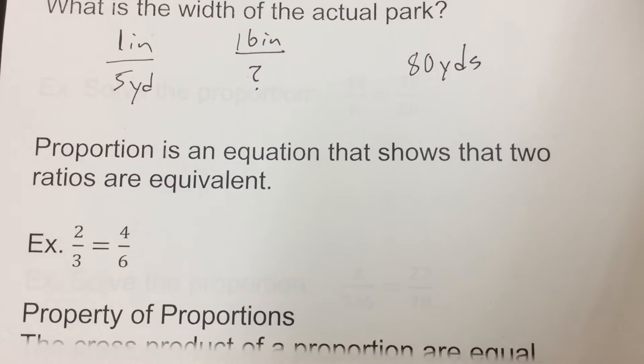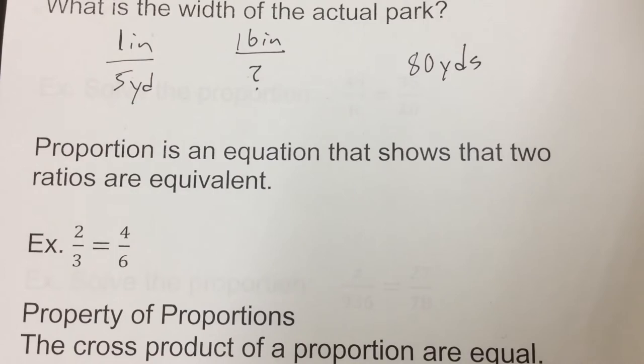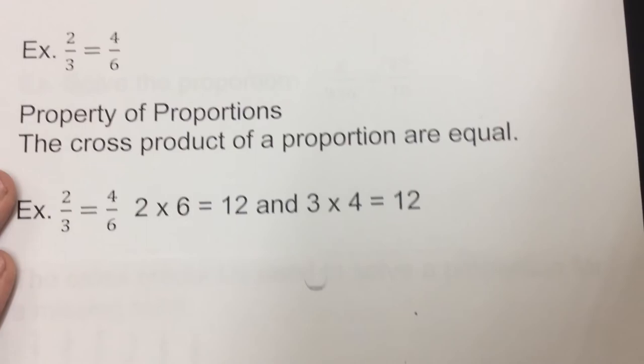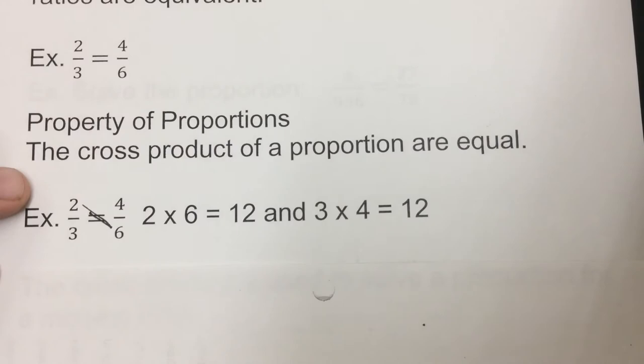So, we're going to do the cross product property, which is that the cross product of a proportion are going to be equal. So, in that example, if we take 2 times 6, that would be 12, as well as going the other way, where we do 3 times 4, which is also 12. So, the crosses are going to be the same.